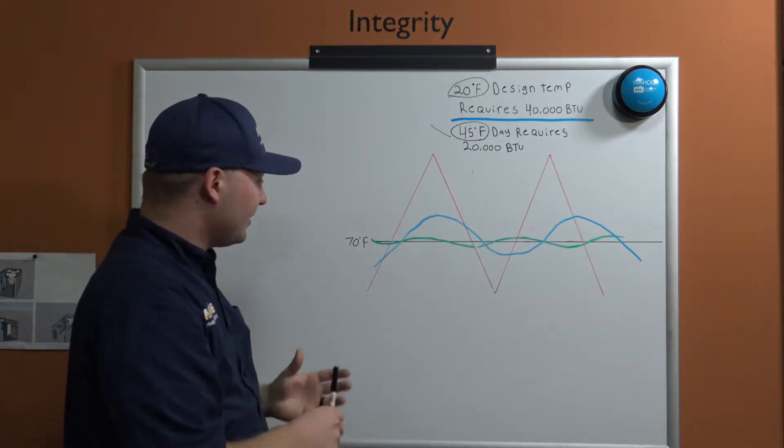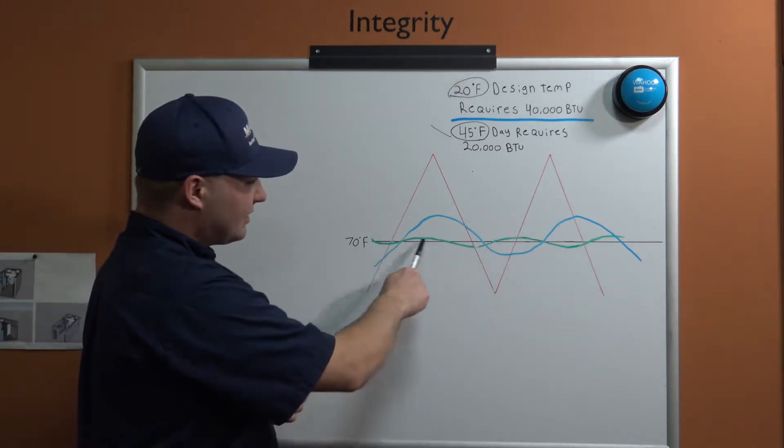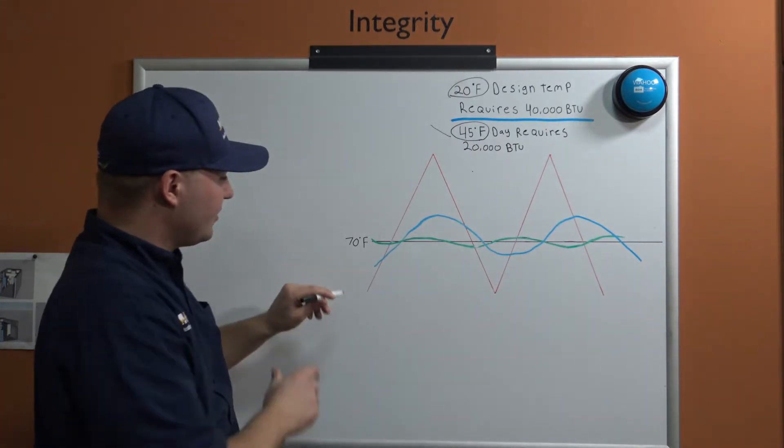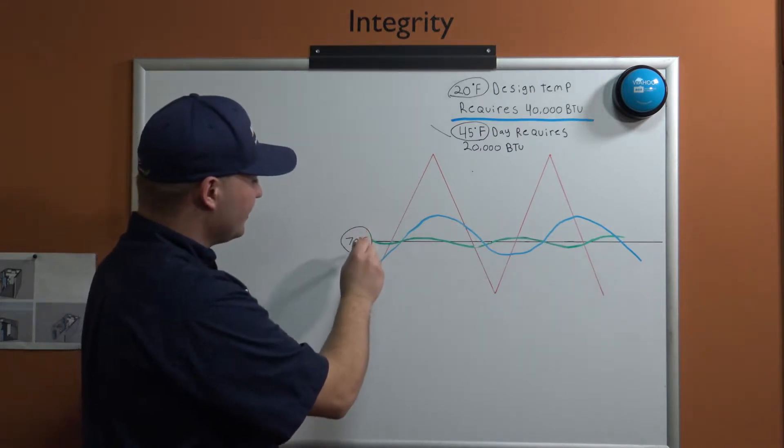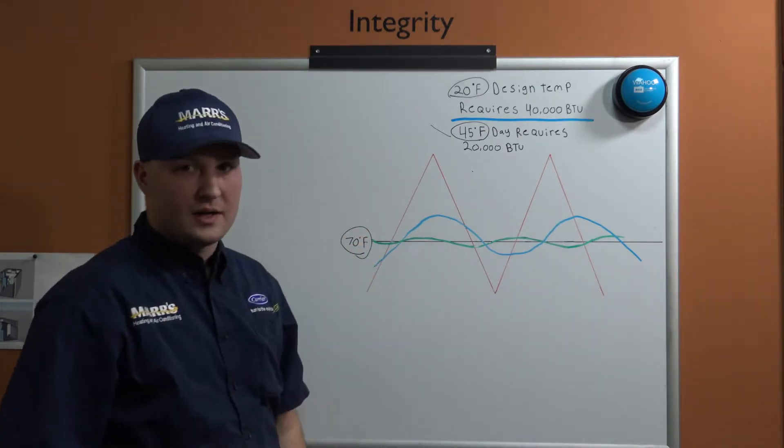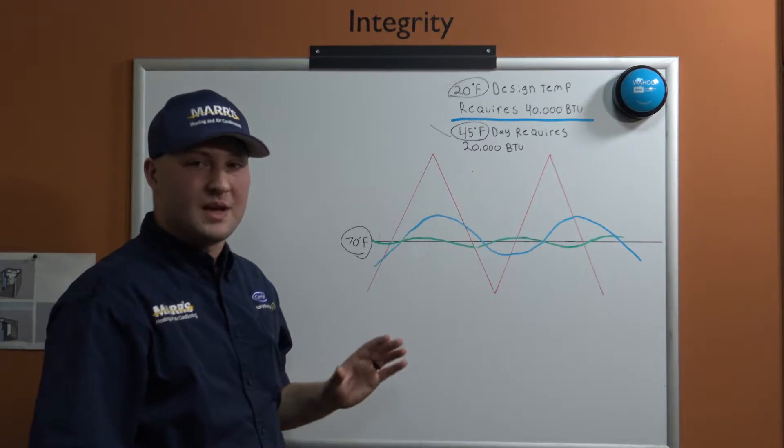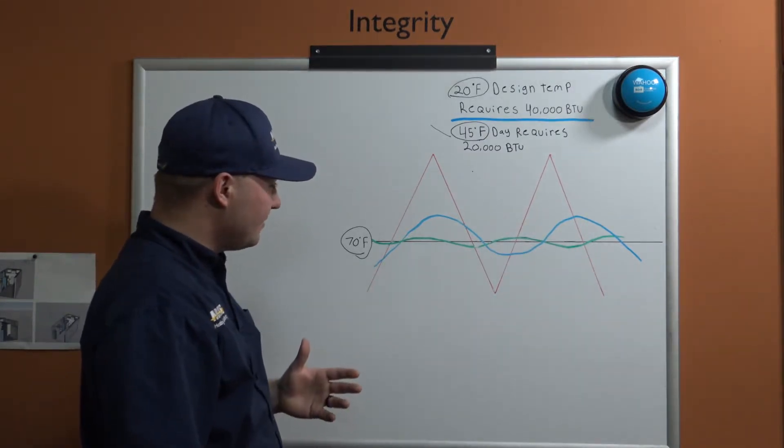That brings us to this little chart here. For all intents and purposes, our black line here, which is flat and linear, is our indoor air set temperature of 70 degrees Fahrenheit. That's the temperature we want to be able to maintain in the home.